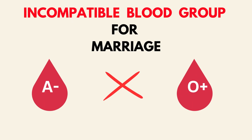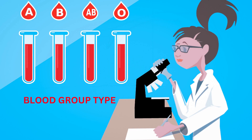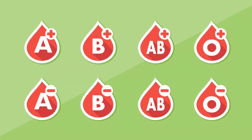Hey guys, welcome back to my YouTube channel. Today we will be talking about blood group incompatibility for marriages. As we all know, there are four types of blood groups: A, B, AB, and O. These four blood group types are split into eight major blood group types including the Rh factor, which are A positive, A negative, B positive, B negative, AB positive, AB negative, O positive, and O negative.